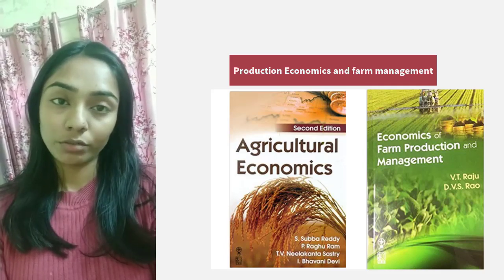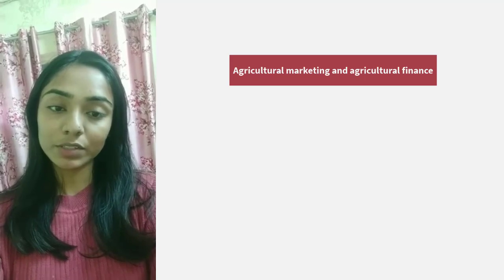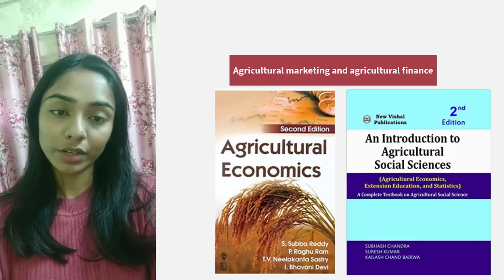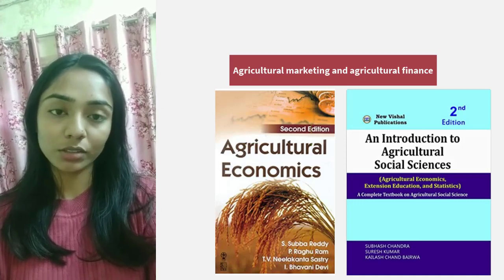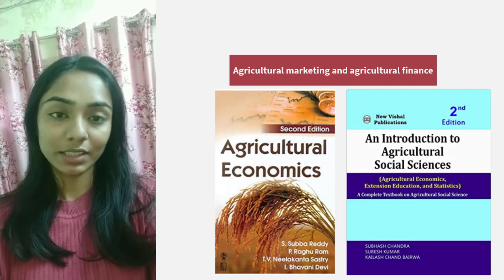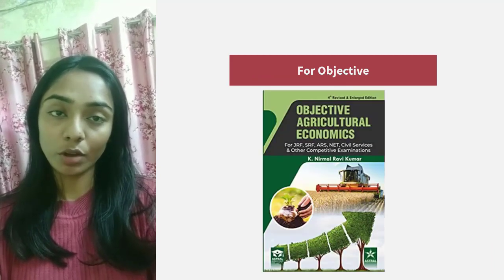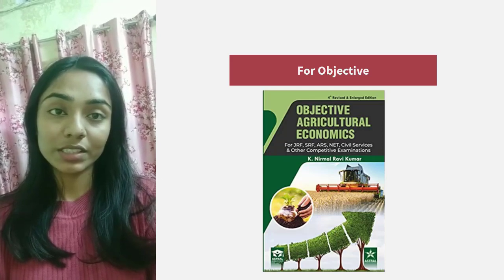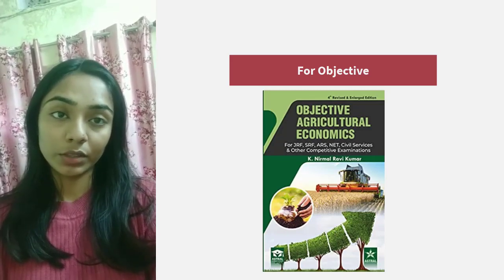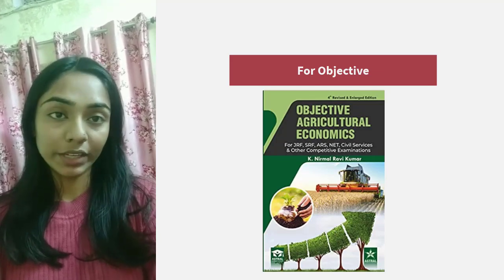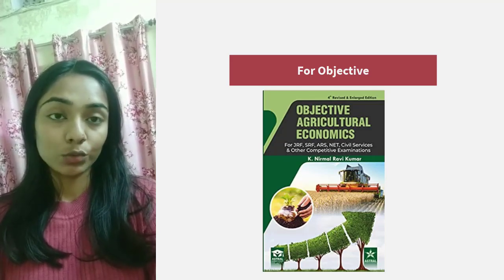Read V.T. Raju once, jot down extra points that you find in this book and you're done. For agriculture marketing and agriculture finance, Subhash Reddy is enough, but you can also refer to Subhash Chandra if you have time, because Subhash Chandra contains everything point-wise, so it's easy to revise from as well. For objective practice, there's a book called Nirmal Ravi Kumar objective book with around 4,600 questions. Solve it once when you complete one unit, mark the questions you couldn't solve, and next time solve those questions only — it will save your time and help you build concepts in economics.